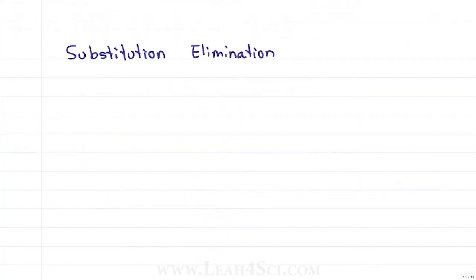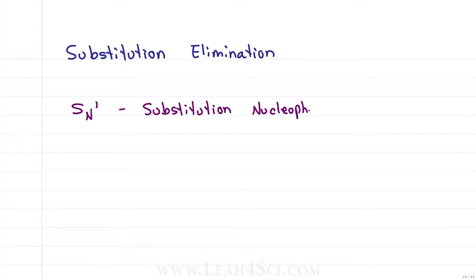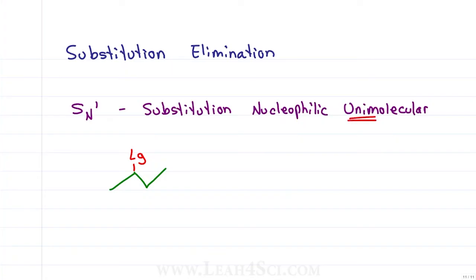Now for the most difficult Orgo 1 reaction set: substitution and elimination reactions. The SN1 reaction stands for substitution nucleophilic unimolecular. In this reaction we replace the leaving group with a nucleophile in a unimolecular — meaning one step at a time — reaction.